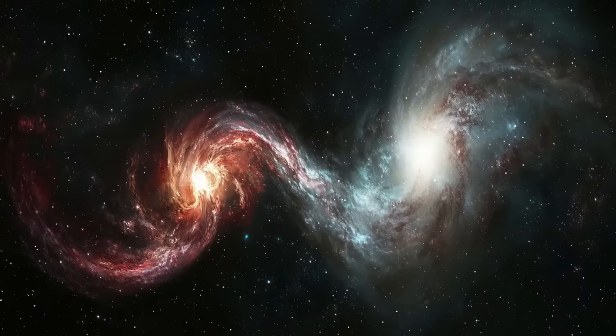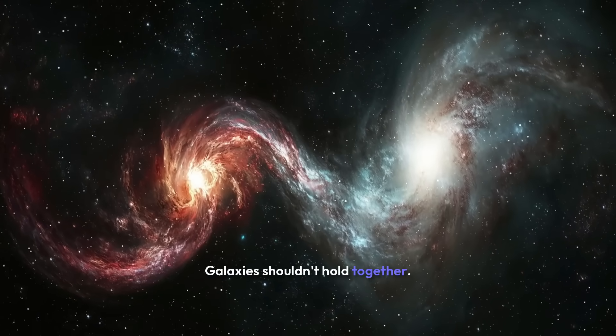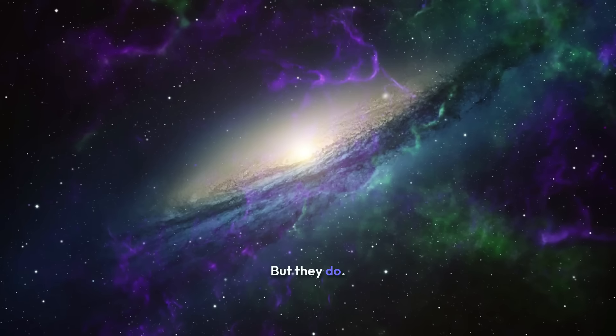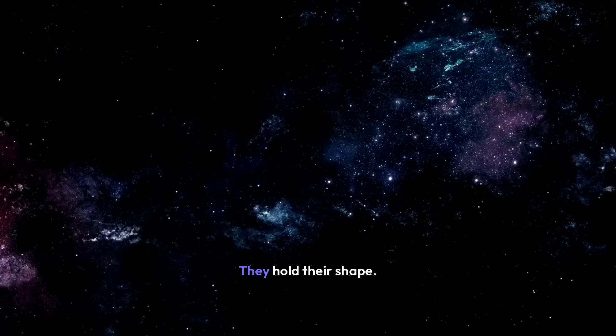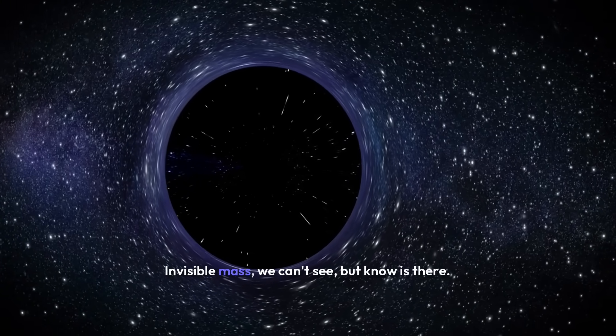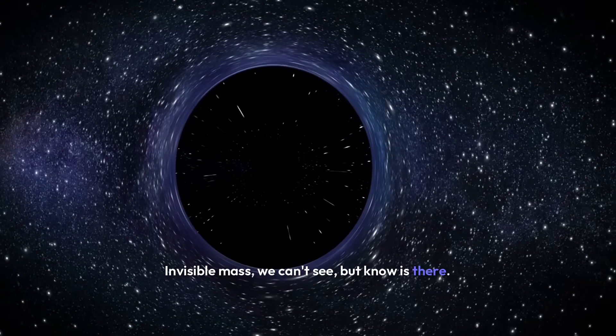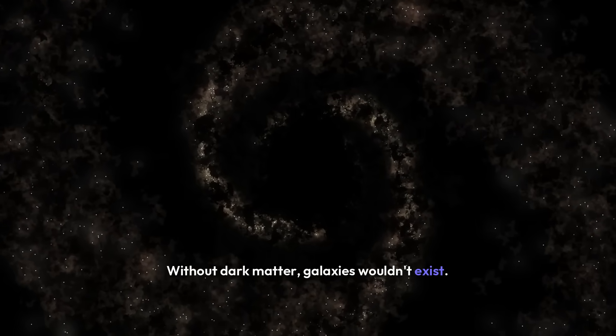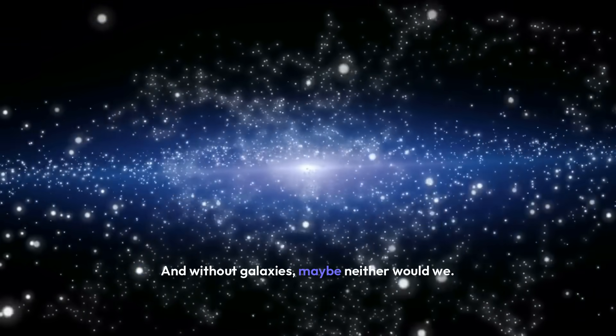Here's something strange. Galaxies shouldn't hold together. Their visible mass isn't enough to create the gravity needed. But they do. They rotate. They move. They hold their shape. Why? Because of dark matter. Invisible mass we can't see but know is there. It makes up about 85% of the total matter in the universe. Without dark matter, galaxies wouldn't exist. And without galaxies, maybe neither would we.